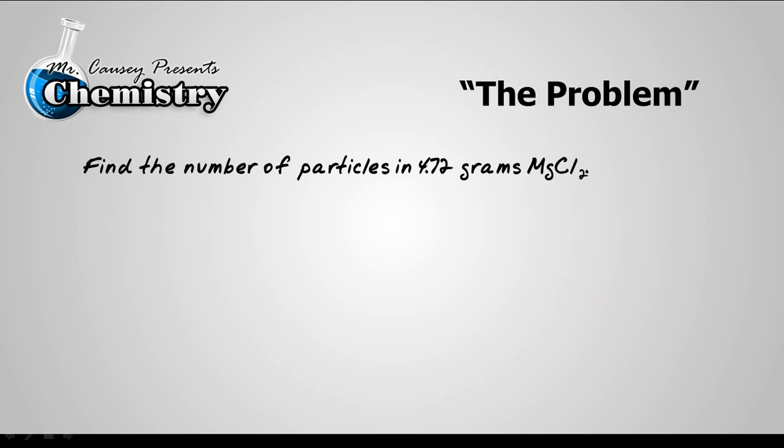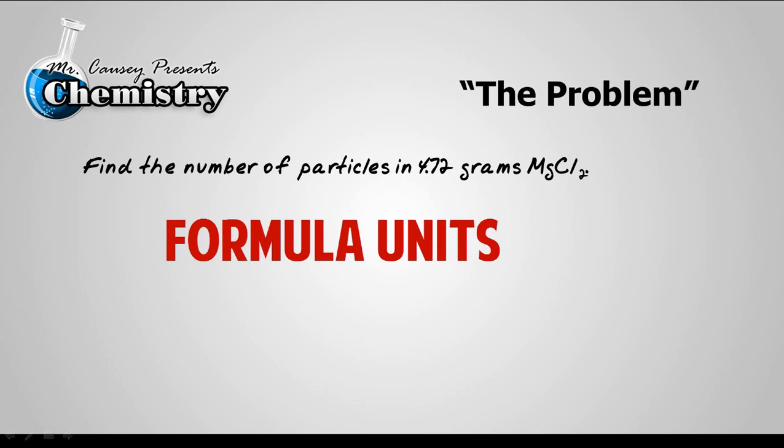Find the number of particles in 4.72 grams of magnesium chloride. We need to find the number of particles. Now what you need to realize is that magnesium chloride is ionic, and because it's an ionic compound, then the particles that we're going to look for are formula units because that's the smallest particle that we recognize for ionic compounds.